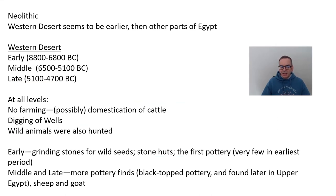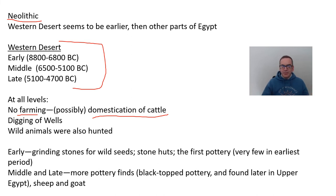Now we move down to the Neolithic. This is probably one of the most important time periods in human history — where people start to farm. Early on, you get domestication of cattle: they capture wild cattle, bring them in, probably build fences, and learn the mating habits to produce more cattle. They're certainly digging wells for water, especially in areas a little further out from the Nile. We know from bone remains they're still hunting wild animals. They're also starting to treat food differently — grinding up wild seeds, which makes it easier to eat, especially in terms of cooking. They're starting to build enclosures like stone huts and places where people are living.